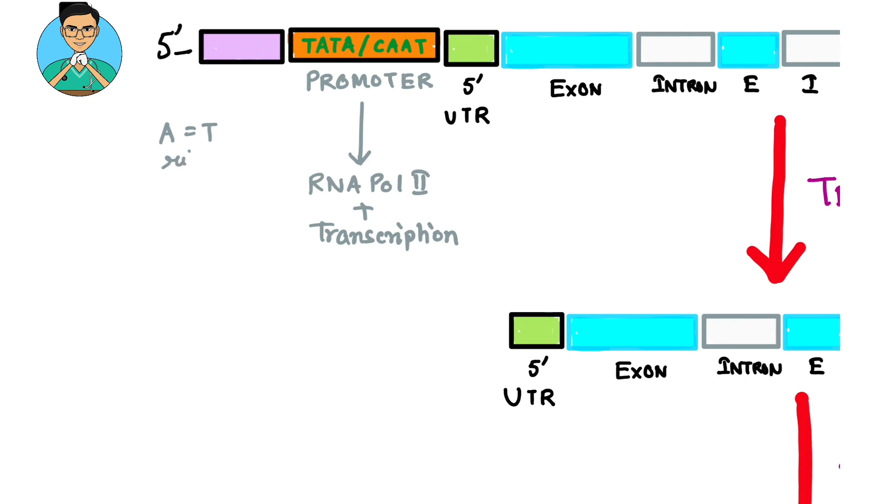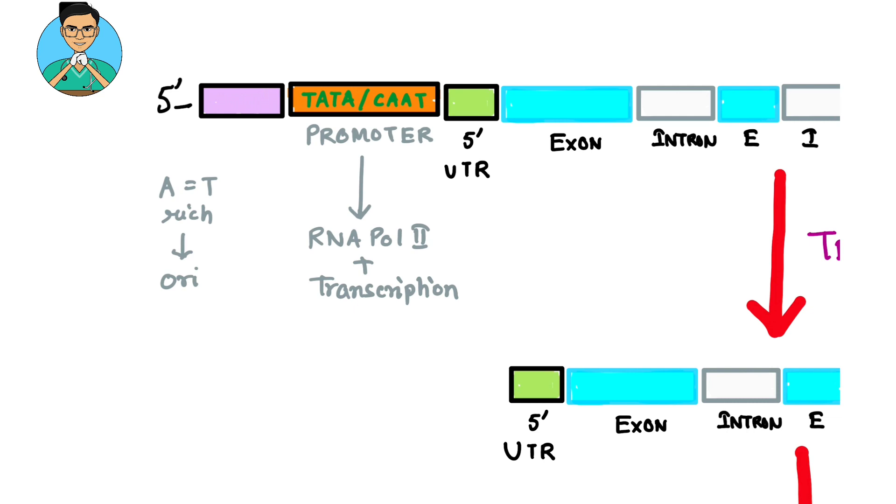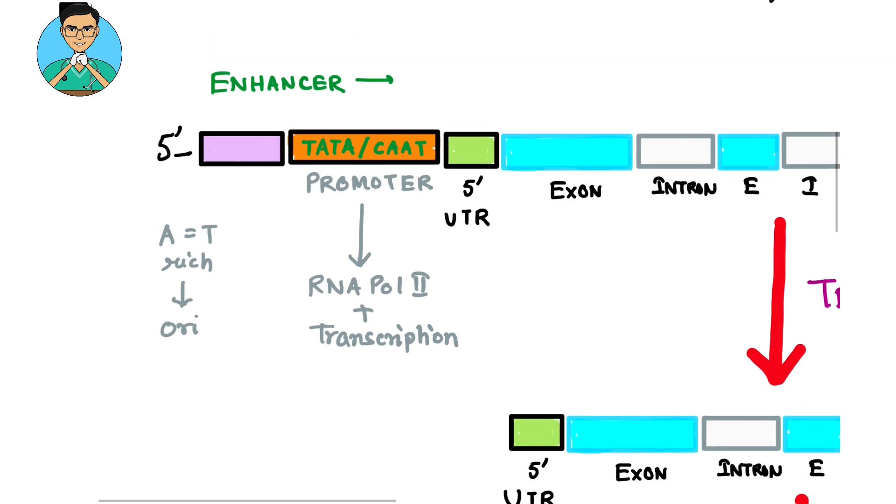Next comes the idea of an enhancer. Suppose this purple segment is an enhancer. An enhancer is simply a sequence in the gene which causes an increase in gene expression.